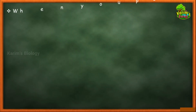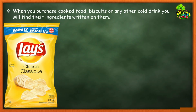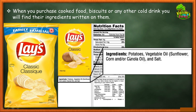Every food item — whether prepared at home or a packed item from the market — is prepared using ingredients. If you look carefully at packaged food items like biscuits or potato chips purchased from the market, the ingredients used are definitely printed on the packet. For example, take this Lays packet. Can you see where the list of ingredients is printed? The ingredients used in preparing these potato chips include potatoes, vegetable oil — such as sunflower oil or canola oil — and salt.